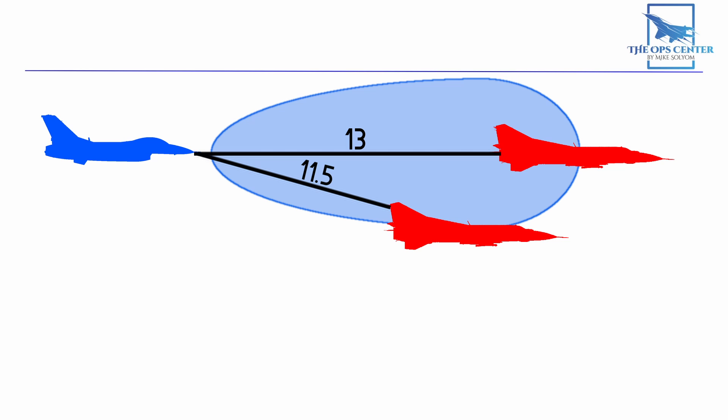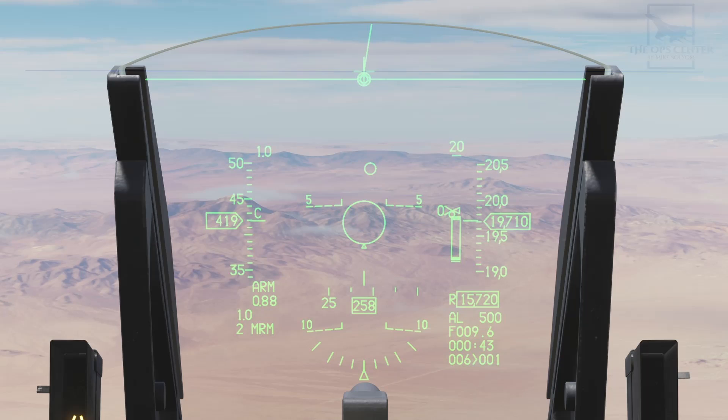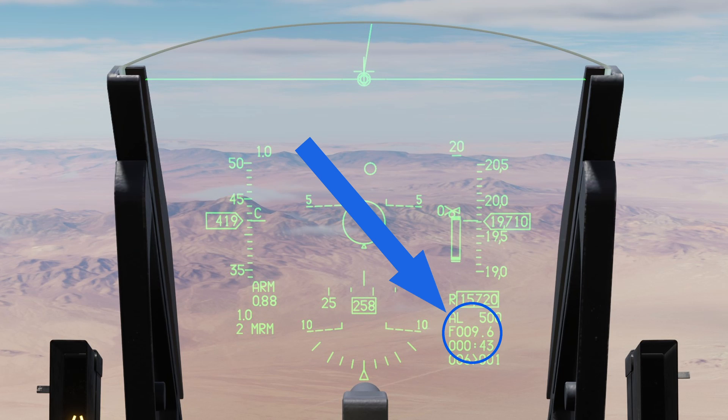Shooting up also lowers range. Even with lower drag from decreased air pressure, our WEZ shrank. It went down to about 10 miles when launching from an altitude of 20,000 feet at a target that was up at 30,000.